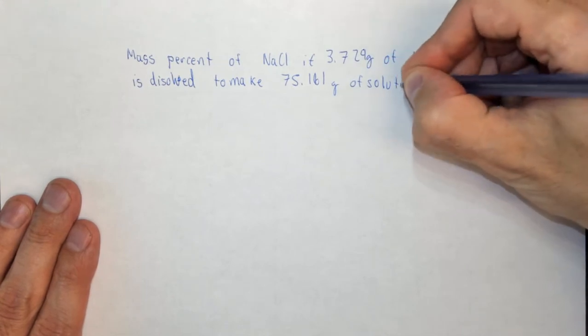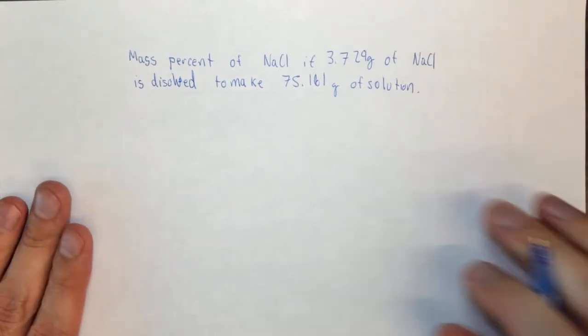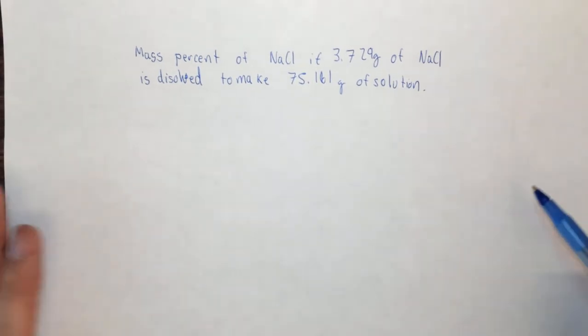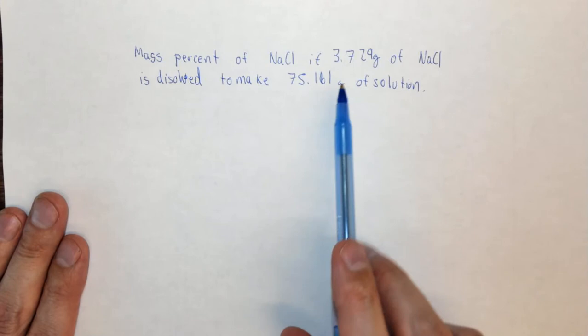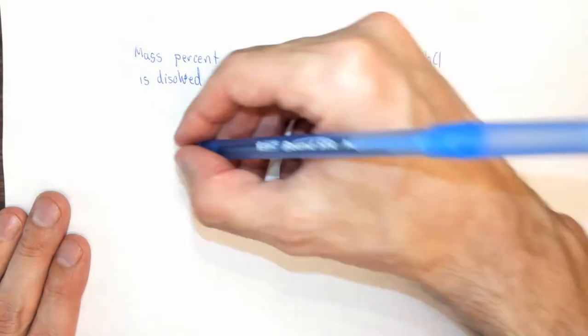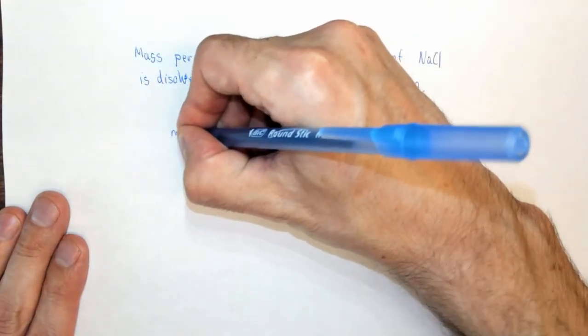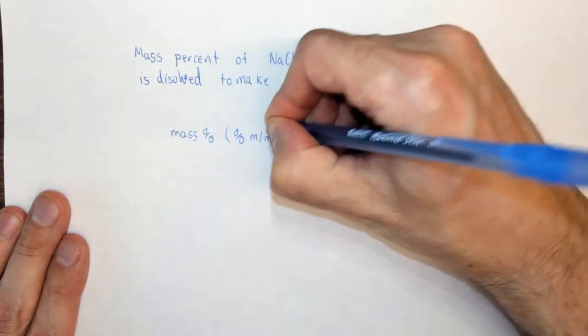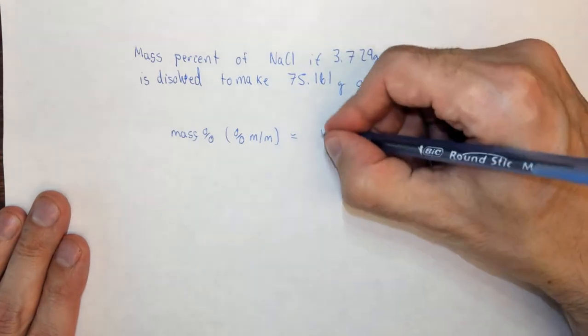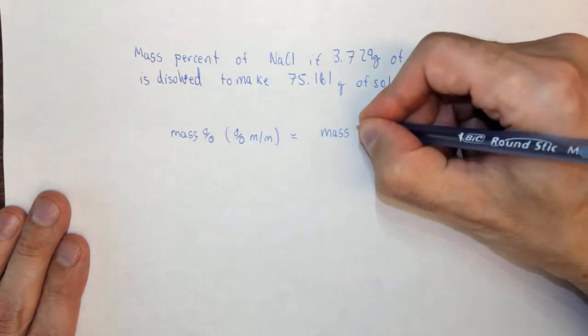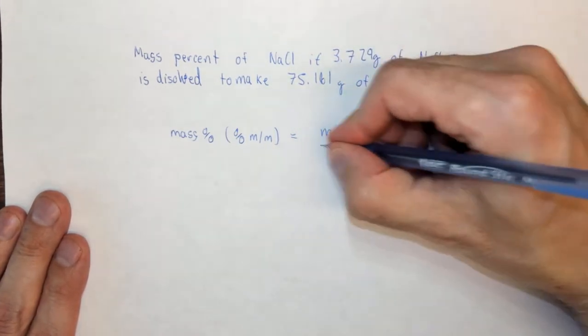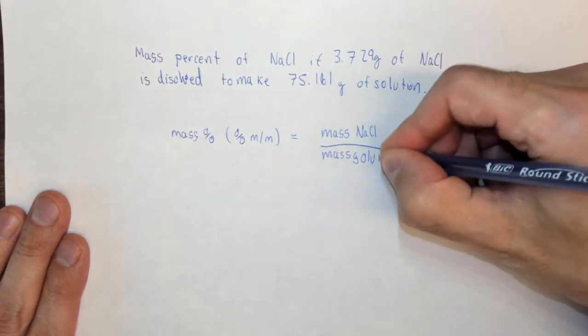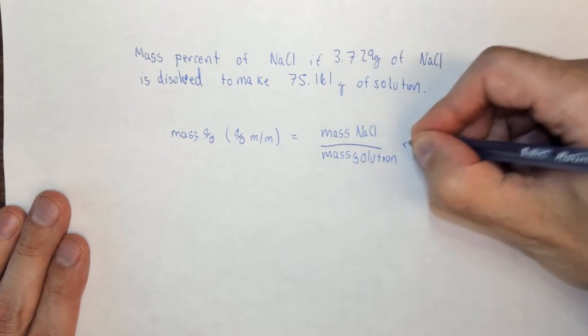This is right out of our lab manual. In the second experiment, we look at the conductivity of salt water using different mass percent solutions. Remember that a percentage is the part divided by the whole. The mass percent, often abbreviated as percent m/m, equals the mass of the solute—in this case NaCl—divided by the mass of the solution times 100.